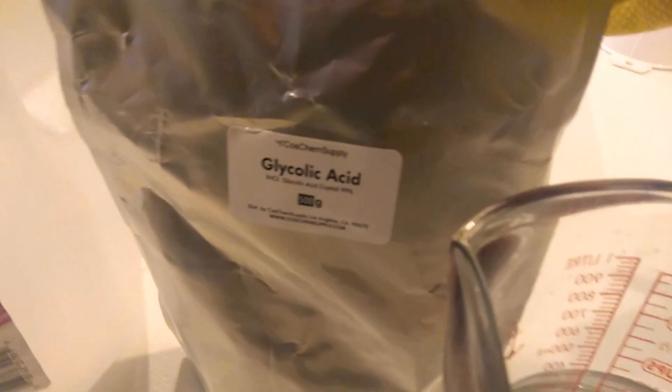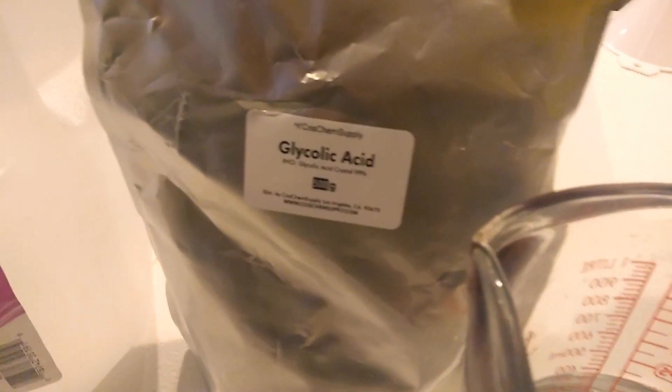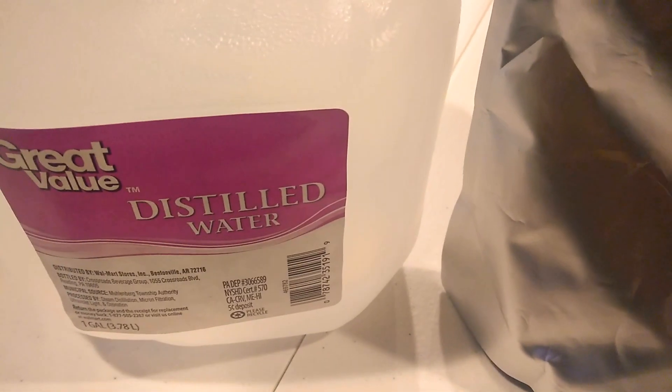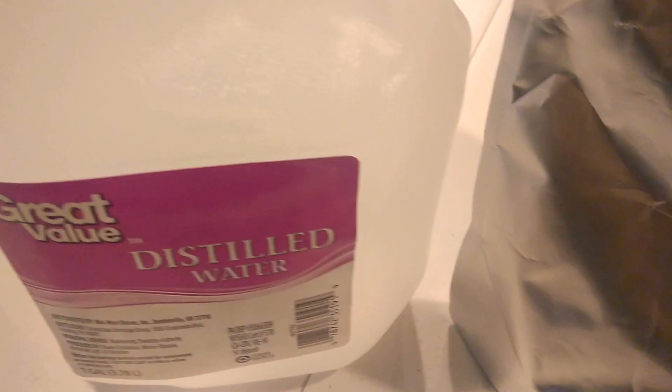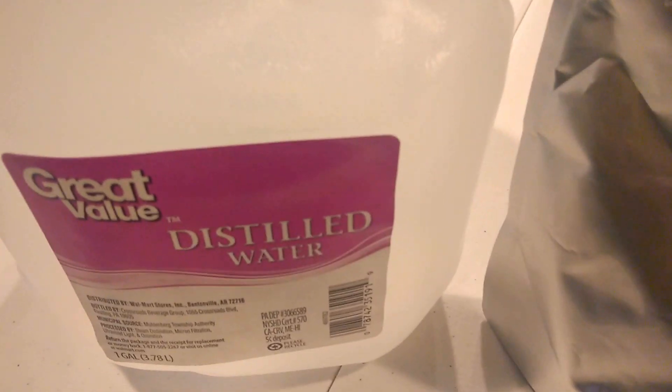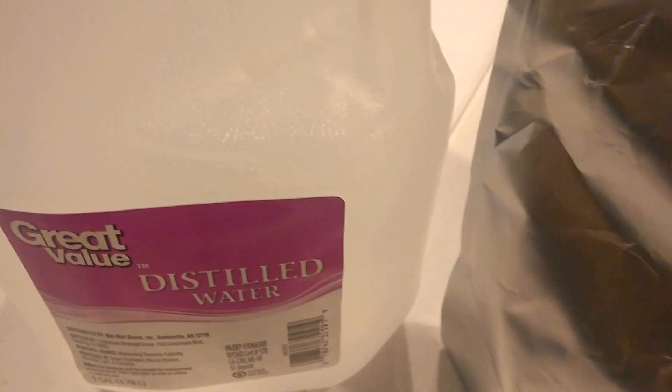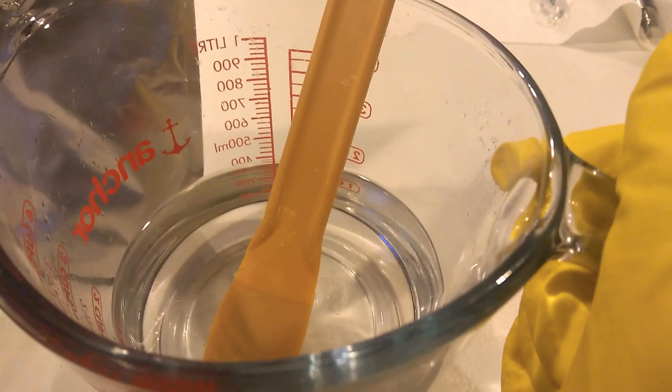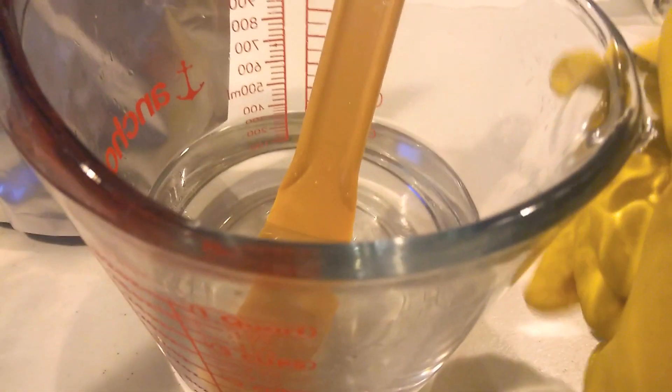To make 500 ml, all you need is 350 grams of the glycolic acid crystal or powder, and then 150 grams of distilled water. Measure your 150 grams of water in a heat-safe glass like mine. Put it in your microwave and heat it for two minutes.